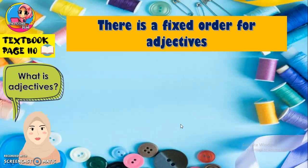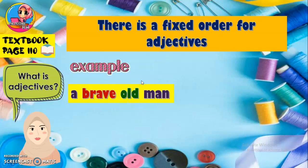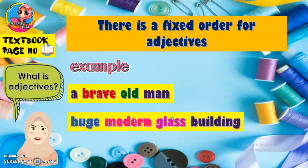There is a fixed order for adjectives. Terdapat turutan yang tetap pada adjective. Kita tak boleh suka-suka nak letak adjective suka hati kita — dia ada turutan yang tetap. Example: 'a brave old man' — we cannot say 'an old brave man'. Tak boleh terbalik — tak boleh old dulu baru brave. Similarly, 'huge modern glass building' — kita tak boleh letak glass modern huge building. Adjectives have a specific order that we must follow.